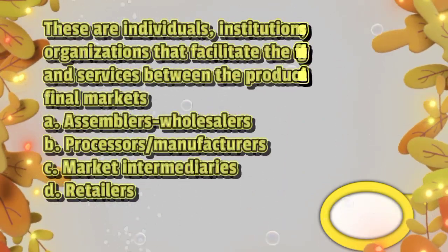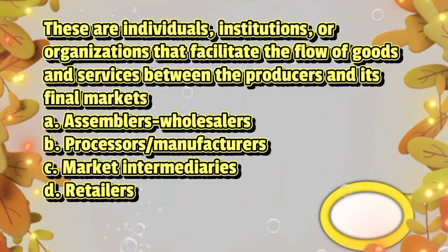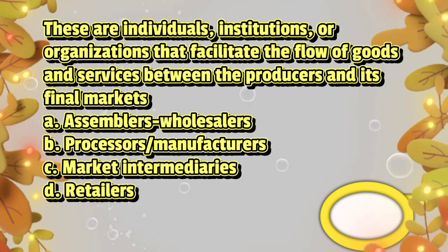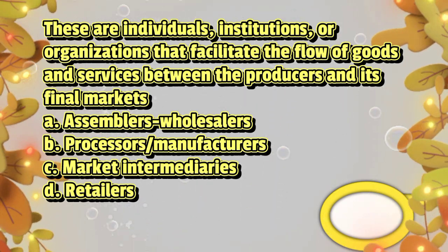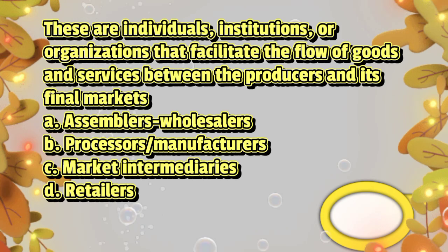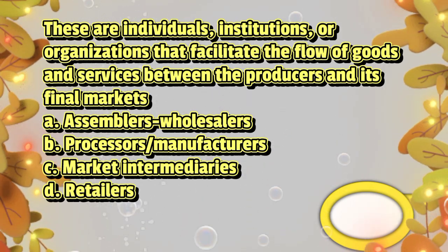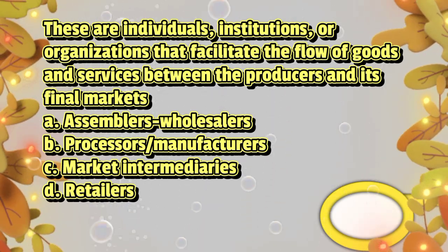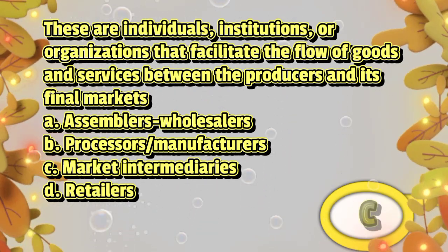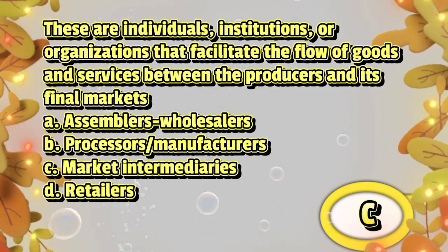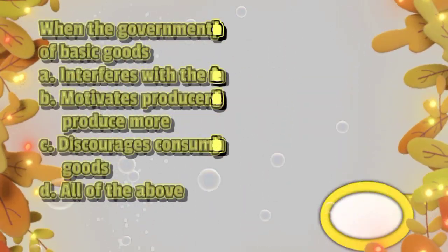These are individuals, institutions, or organizations that facilitate the flow of goods and services between the producers and its final markets. A. assemblers and wholesalers, B. processors and manufacturers, C. market intermediaries, D. retailers. The answer is letter C.